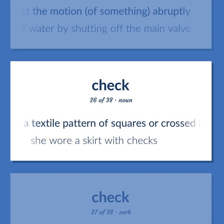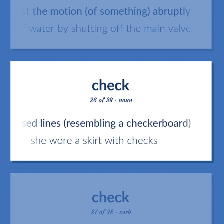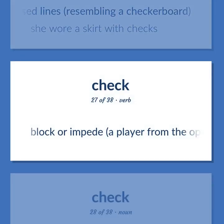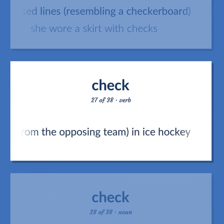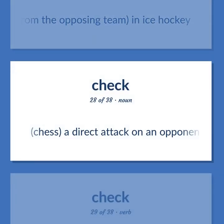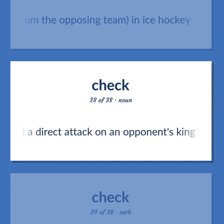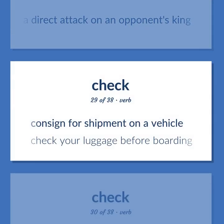A textile pattern of squares or crossed lines, resembling a checkerboard. She wore a skirt with checks. Block or impede a player from the opposing team, in ice hockey. Chess: a direct attack on an opponent's king. Consign for shipment on a vehicle. Check your luggage before boarding.